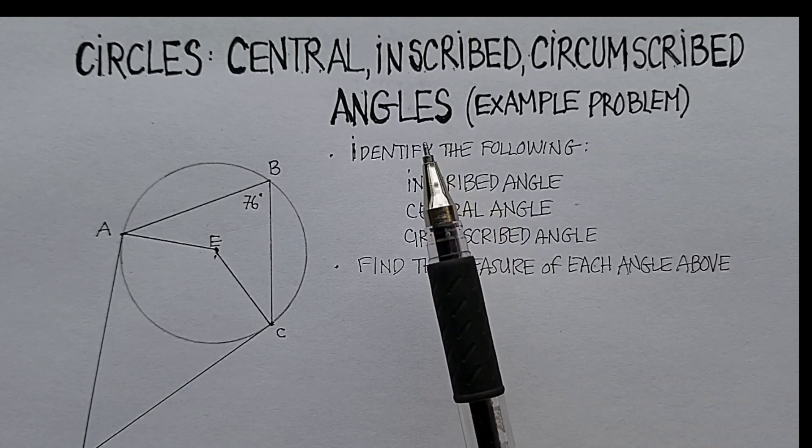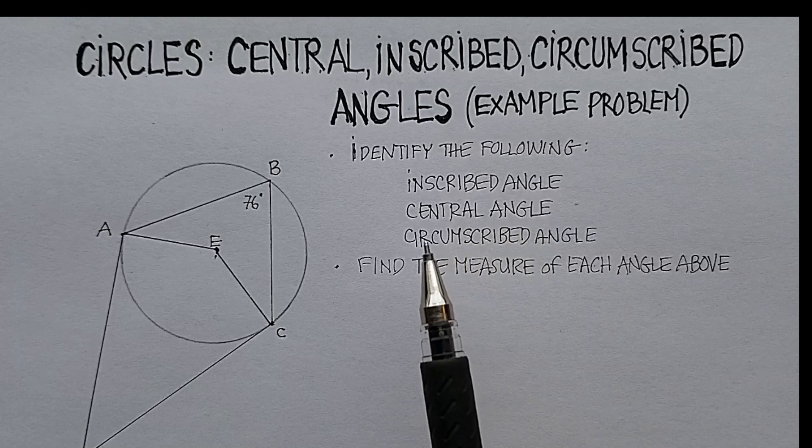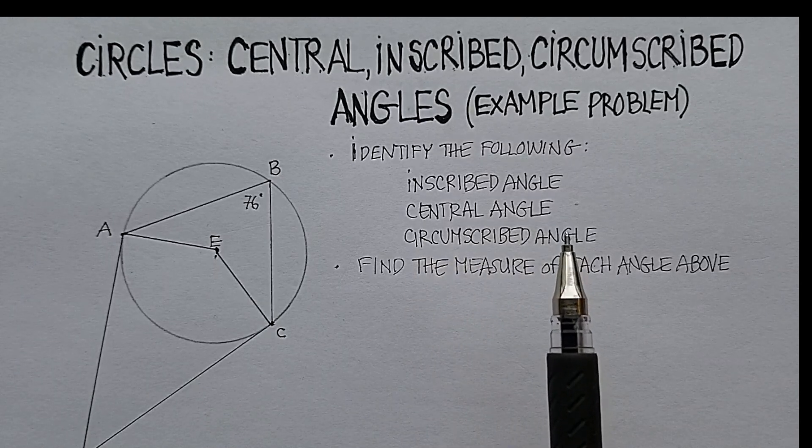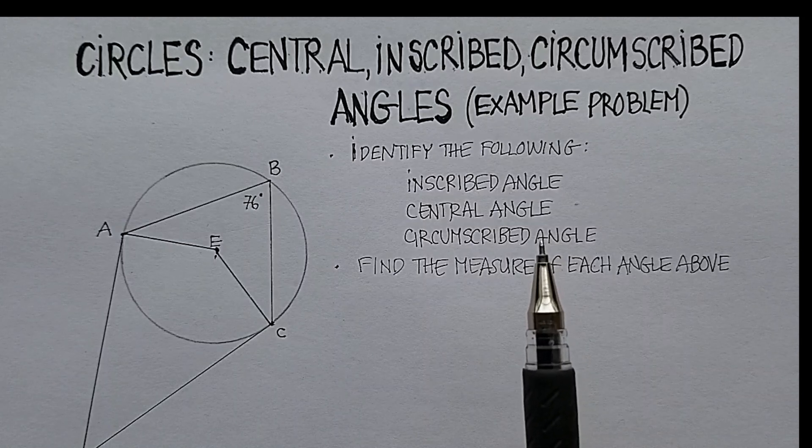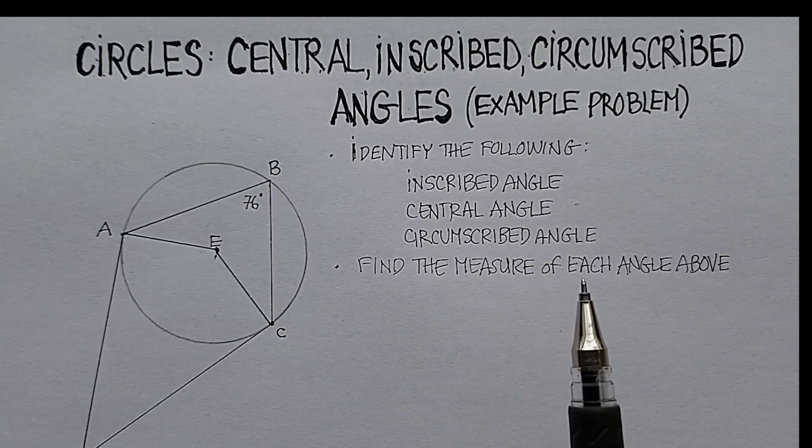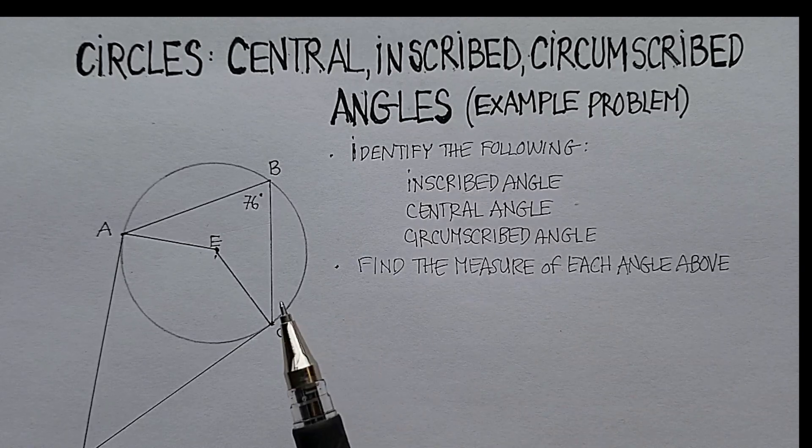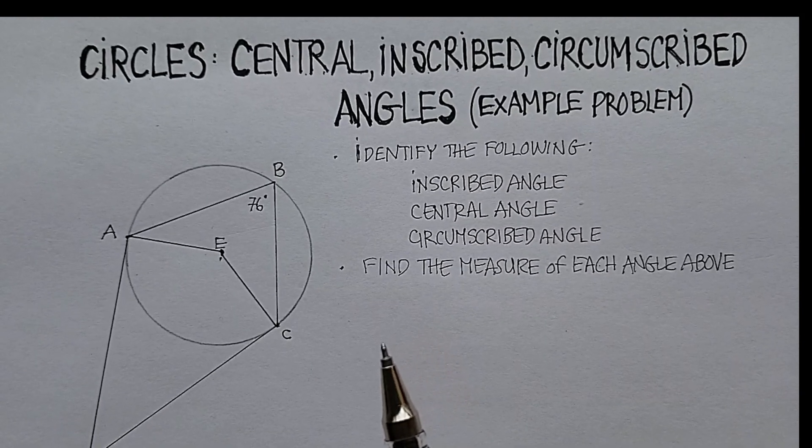So what we're going to do first is identify which of the angles is the inscribed angle, which one is the central angle, and which one is the circumscribed angle. We're going to briefly talk about how you calculate the measure of each of those angles, and then we're going to find the measure of the missing angle here below, of each of the angles, actually.